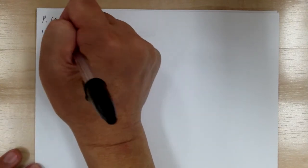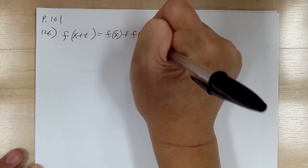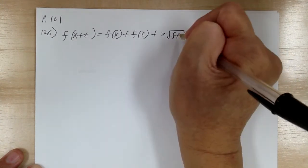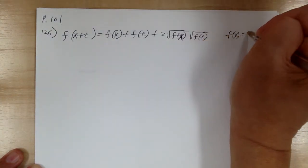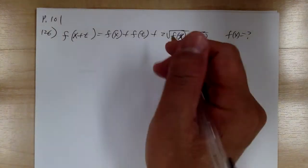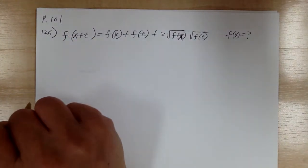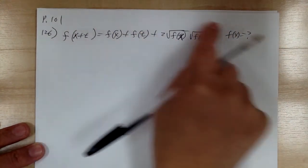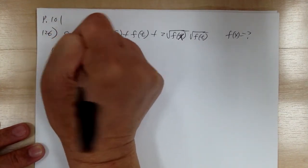Let's go to the next one. We need to solve the functional equation: f of (x plus t) equals f of x plus f of t plus 2 times square root of f of x times square root of f of t. We're looking for what f of x equals. Since this is a functional equation, we can set variables to different values to simplify. To get f of x alone on the left side, let t equal to 0.